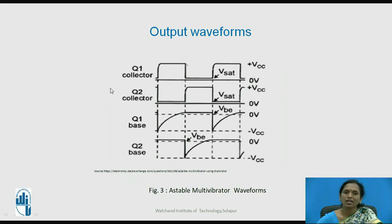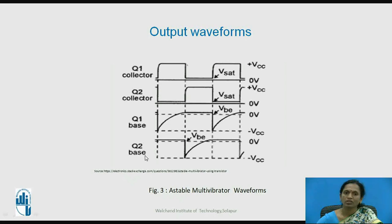The output waveforms at the collector terminals of Q1 and Q2 switch between 0 V and VCC. Because the capacitors charge slowly, the voltage at the base terminals rises gradually — an exponential increase — and this is reversed between the base of Q1 and the base of Q2. These are the collector and base waveforms for transistors Q1 and Q2.